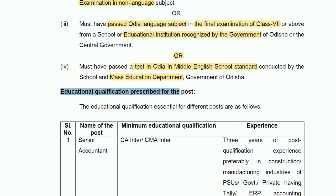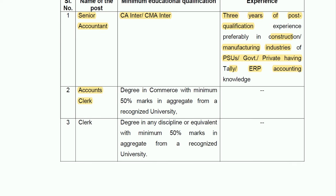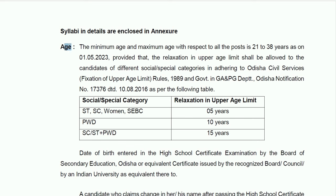Basically, you should have studied in an Odia school or have knowledge of the Odia language. For education qualifications: for Senior Accountant, either CA Inter or CMA Inter is required, with 3 years post-qualification experience — note that articleship experience will not be counted. Experience preferably in construction or manufacturing industries, PSU, government, or private companies, with Tally or ERP accounting knowledge. For Accounts Clerk, a degree in Commerce with minimum 50% marks in aggregate from a recognized university is required with no experience needed. For Clerk, a degree in any discipline with minimum 50% marks is acceptable.